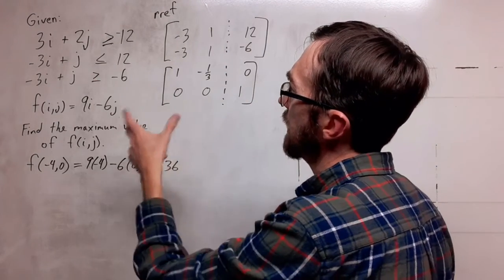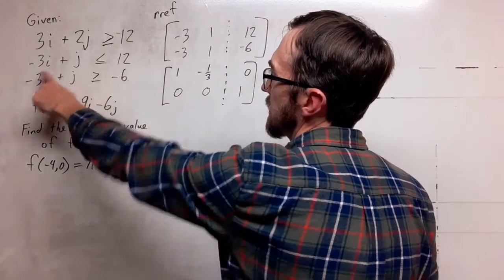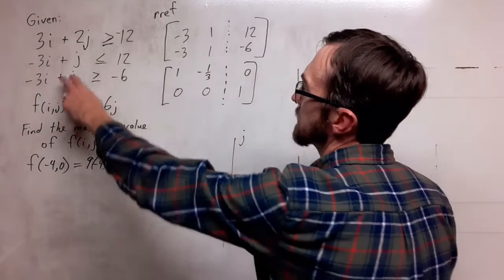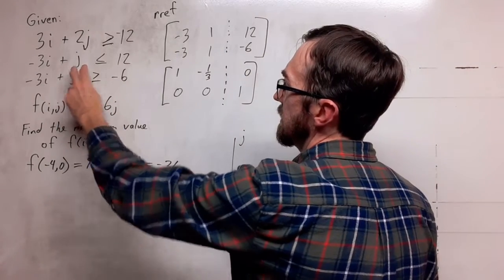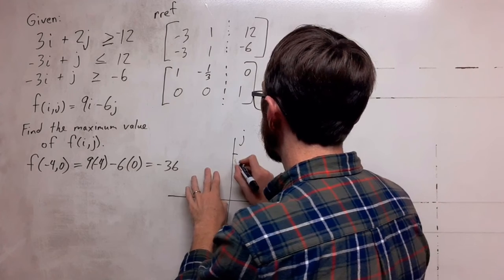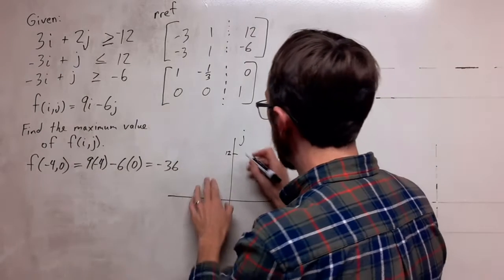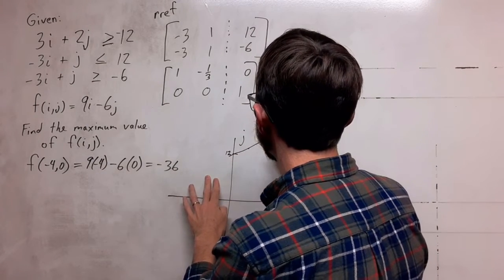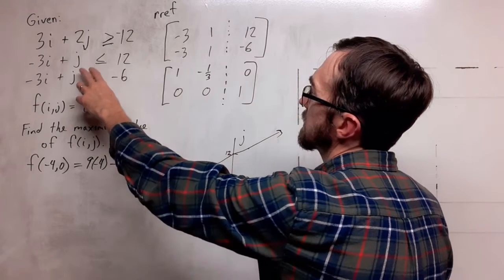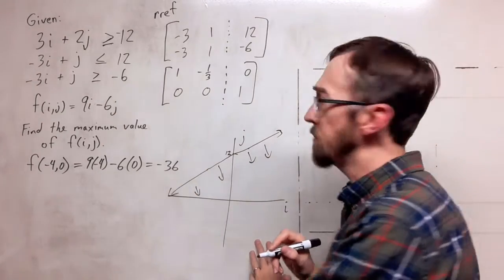What happens if I should graph this? If I graph this on the ij axis, this first one I have j is going to be less than or equal to 3i plus 12. So up here at 12 is my intercept, and then I'm going to have 3 up and 1 over. So I have this positive here and I am shading in the downward direction, the lower half of the plane here.